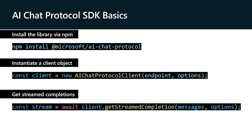Let's cover some basics. The core concepts of the AI chat protocol SDK may look familiar if you're familiar with other libraries such as the Azure SDKs. You can install the library via npm at microsoft/ai-chat-protocol. Once you have the package installed, you can instantiate a client to perform all of your operations and configurations through one object. The AI chat protocol features both synchronous and stream completions, giving you easy ways to incorporate generative AI output into your front ends.